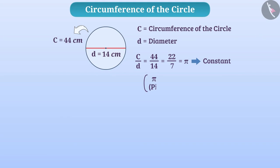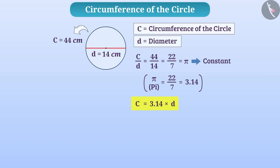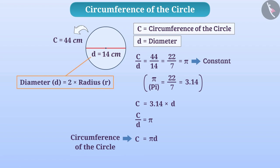In decimal, pi = 22/7 is approximately equal to 3.14, which shows that the circumference of the circle is more than 3 times the diameter. If we represent the circumference by C and the diameter as d, then pi = C/d. This gives us the formula C = πd. Since the diameter is twice the radius, i.e. d = 2r, we can also write the formula as C = 2πr.